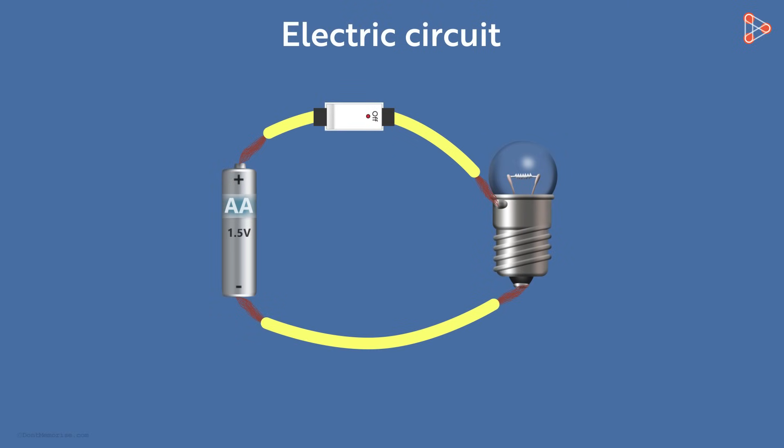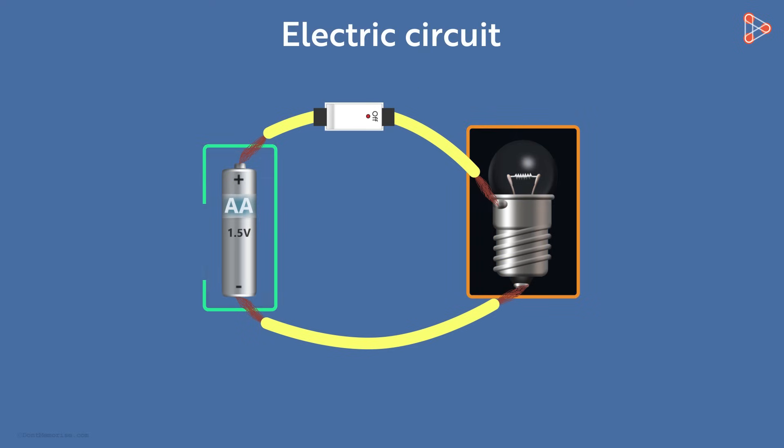Let us look at this circuit now. How many components does this circuit have? Yes, three. A bulb, cell and a switch.